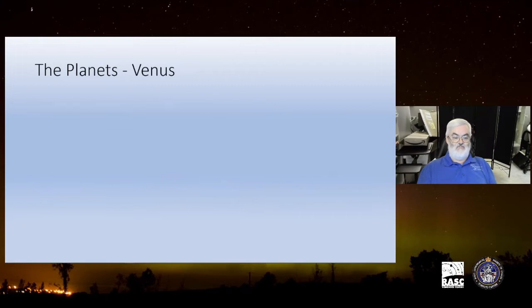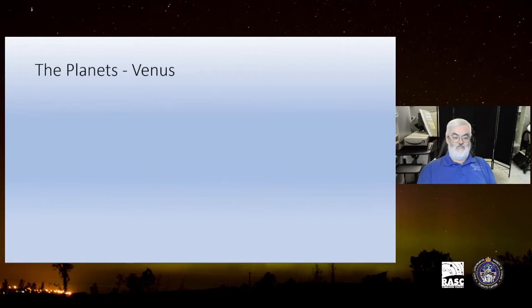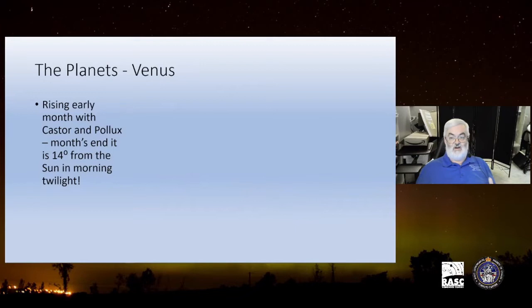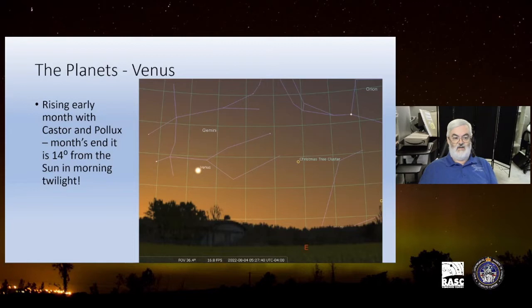Let's take a look at Venus because that of course is always a beautiful object to observe, rising early in the month next to or very close to Castor and Pollux. By the month's end it is 14 degrees from the sun in morning twilight. So this is a good opportunity for you to get out and take a look at it. You can see here where it is, it's really quite close to Castor and Pollux right there in the east.